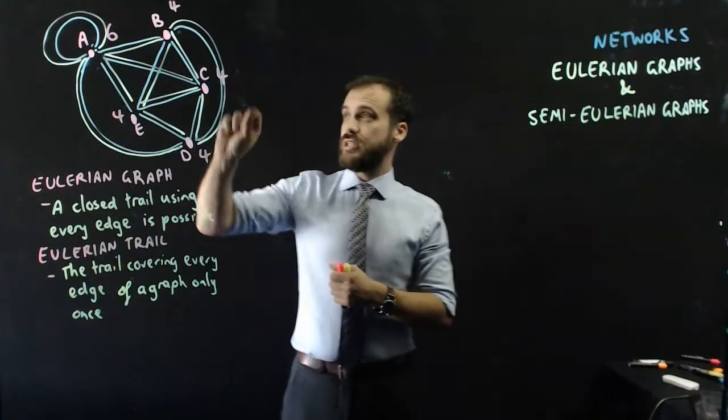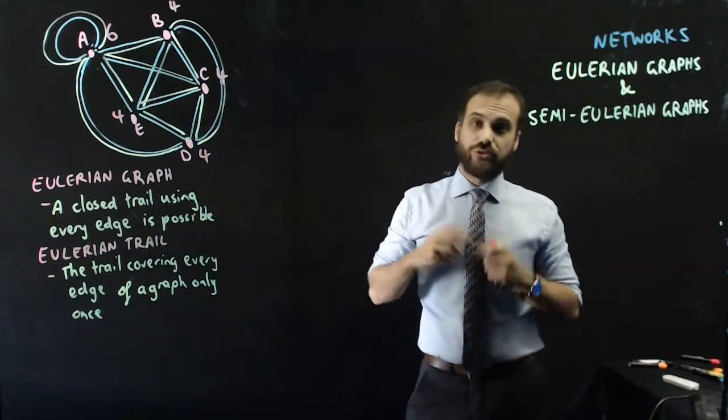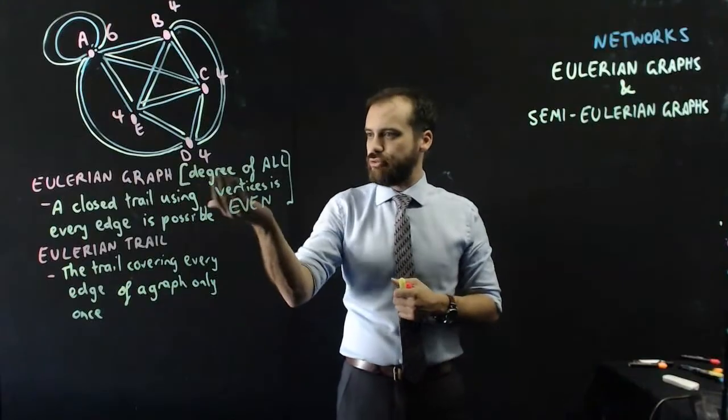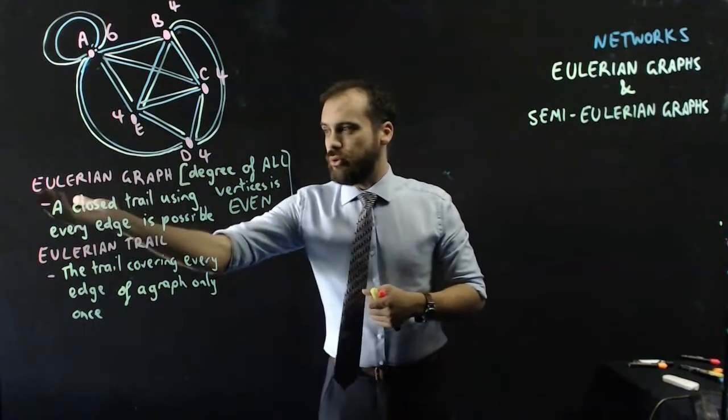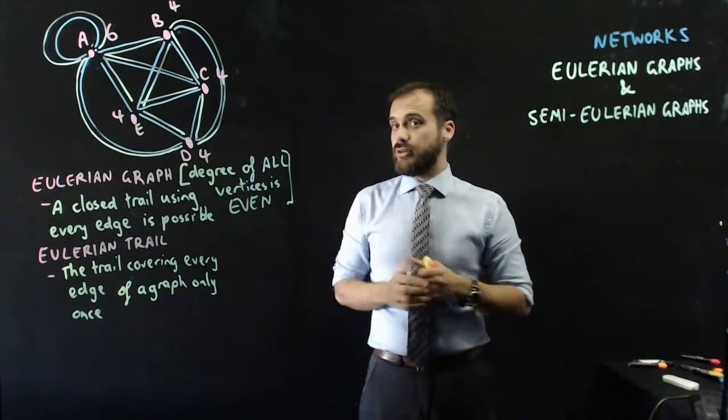It's the fact that every single vertex is even. The degree of each vertex is even. So that's important information: the degree of all vertices is even in an Eulerian graph. That also means that you can create your own Eulerian graph really simply.